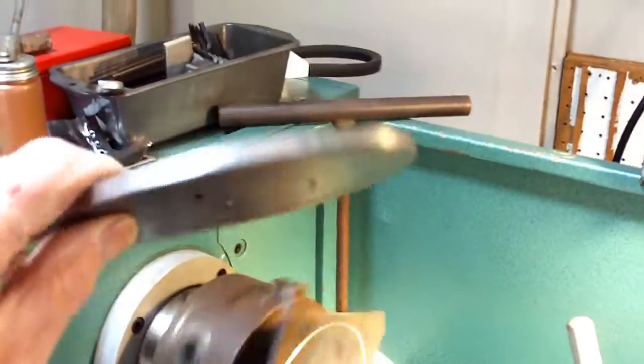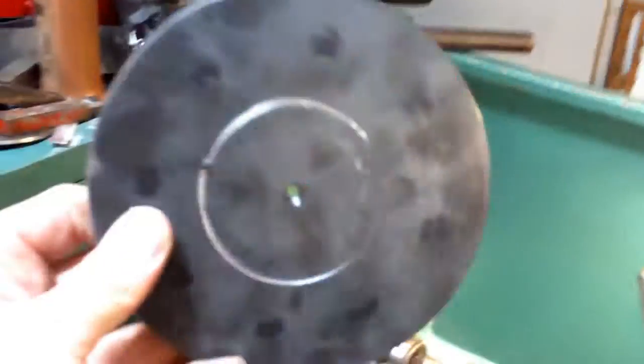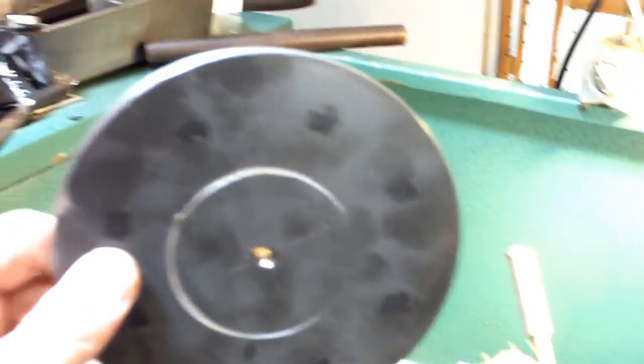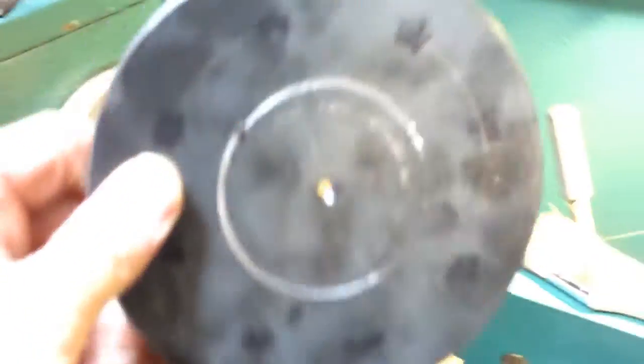And here's one I cut yesterday. Cut out so it's well on its way. Now once I get it like this I can stick it in the three jaw with the chuck jaws reversed and cut the center part for the hubs.